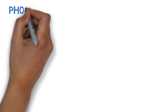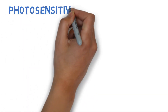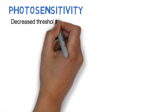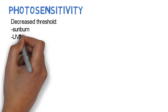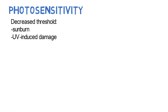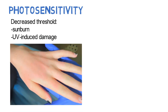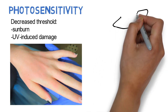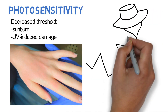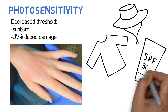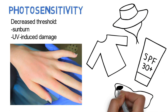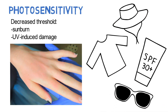Targeted therapies may make the skin more sensitive to the sun by decreasing the threshold for sunburn and UV-induced skin damage. A patient with photosensitivity may present with blistering and painful erythema from brief sun exposure. The patient should be counseled on strict sun protection. Please refer to our video on tips for sun protection for more details.